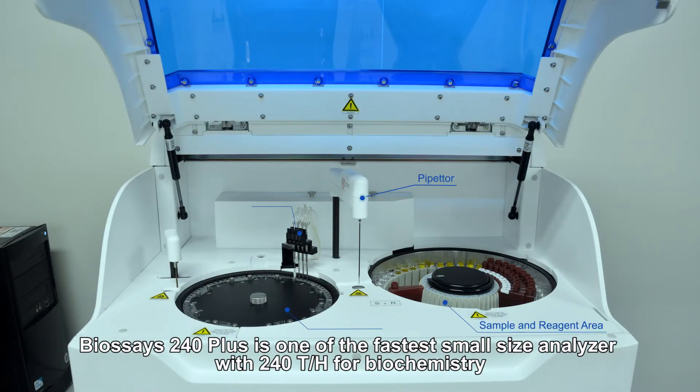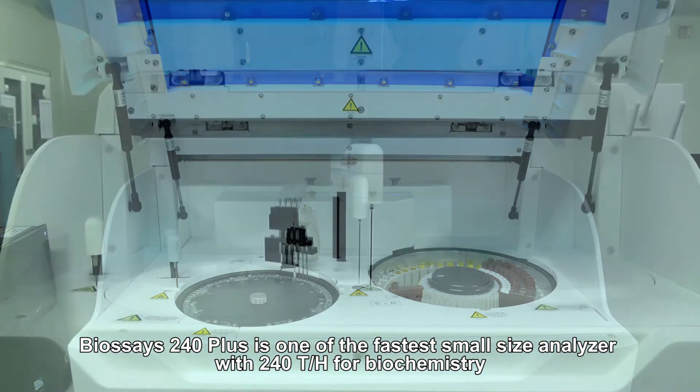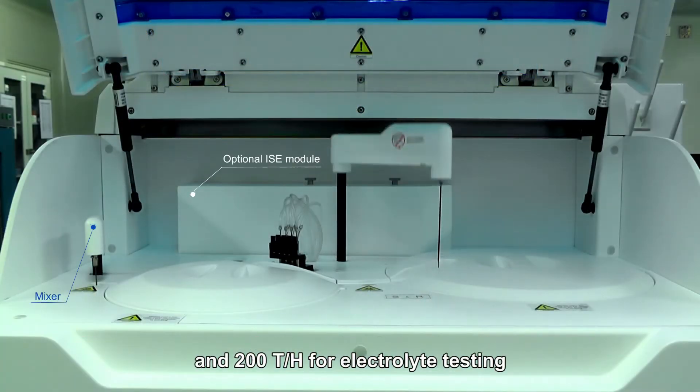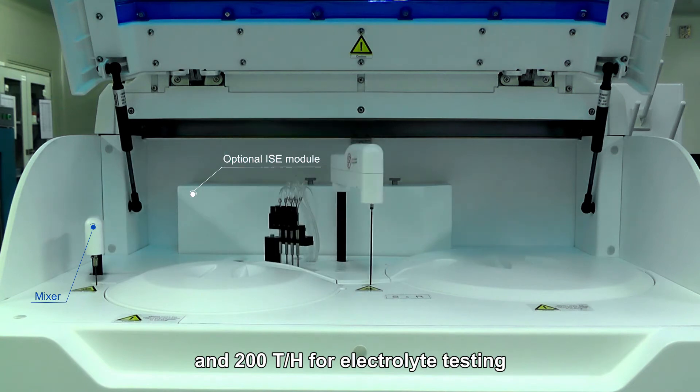BioSays 240 Plus is one of the fastest small size analyzers with 240 tests per hour for biochemistry and 200 tests per hour for electrolyte testing.